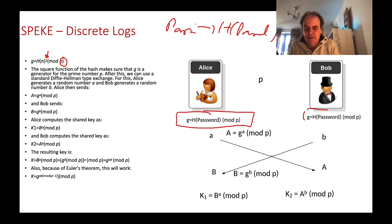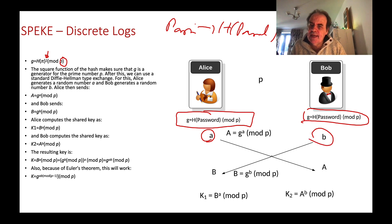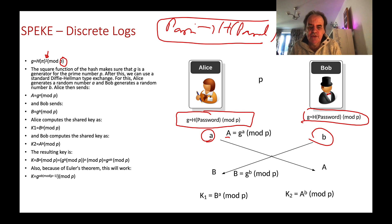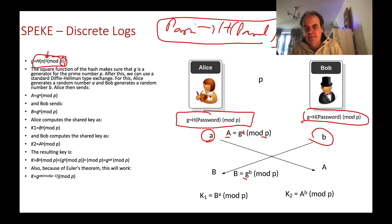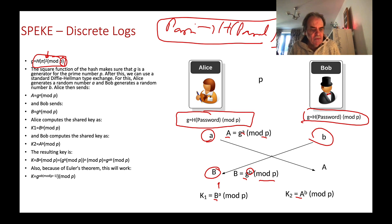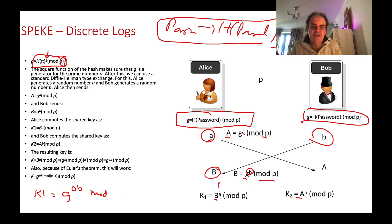After that, it's fairly easy to implement a standard Diffie-Hellman method. Alice generates a random number a and Bob generates a random number b. Alice will then send g to the power of a mod p, and Bob will send g — the generator value — raised to the power of b mod p. In the end, Alice takes Bob's value and raises it to the power of a, and Bob takes Alice's value and raises it to the power of b.